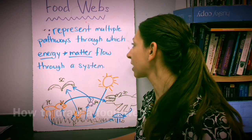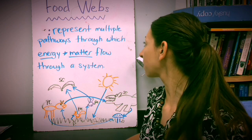So remember, food webs are different from food chains in that they're going to show multiple pathways of energy transfer. Food webs represent multiple pathways through which energy and matter flow through a system.